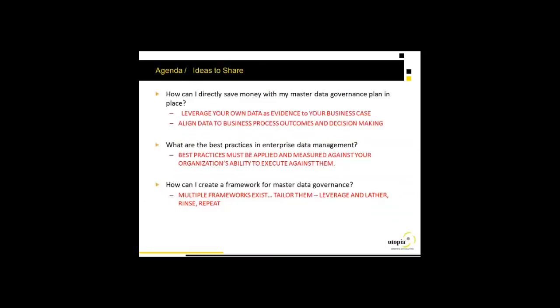As we close out the presentation, I wanted to address three key questions. How do you directly save money with a master data governance plan? Leverage your own data as evidence for your business case — show people the impact that data has on their decision making. Eight different ball bearings at eight different prices is not a good idea. Consolidate the record, have a single view. Align data and business processes to outcomes. Help the business understand that garbage in means garbage out — you're not going to reduce days sales outstanding if your invoices are filled with errors.